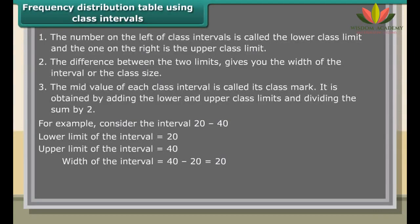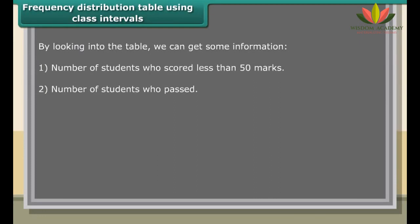The number on the left of class intervals is called the lower class limit and the one on the right is the upper class limit. The difference between the two limits gives you the width of the interval or the class size. The mid value of each class interval is called its class mark. It is obtained by adding the lower and upper class limits and dividing the sum by 2.